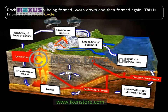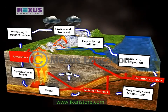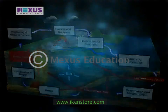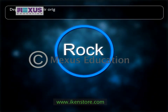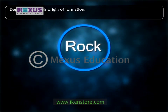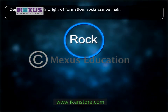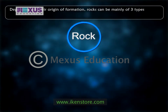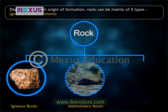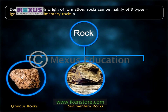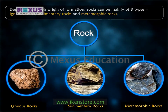Though this cycle might take thousands and millions of years, depending on their origin or formation, rocks can be mainly of three types: igneous rocks, sedimentary rocks and metamorphic rocks.